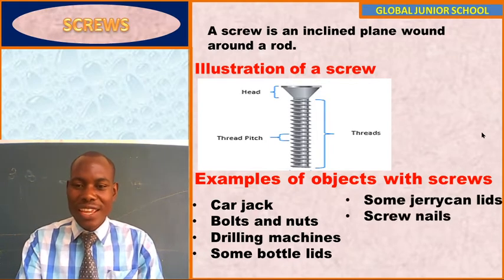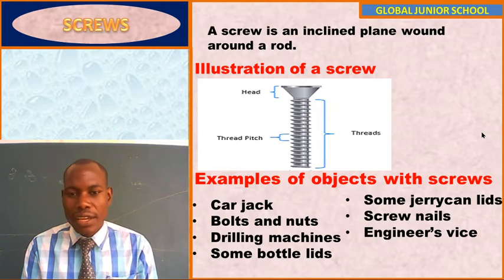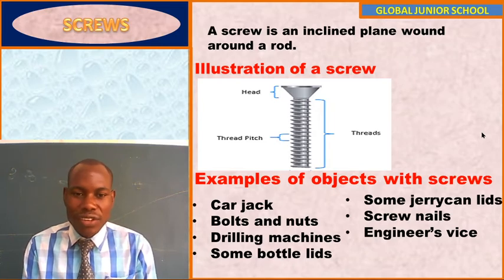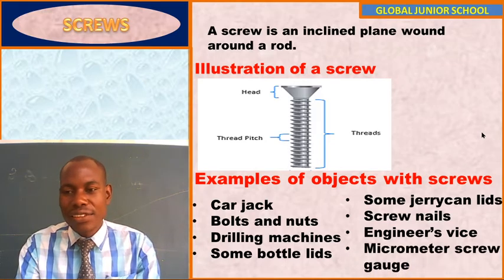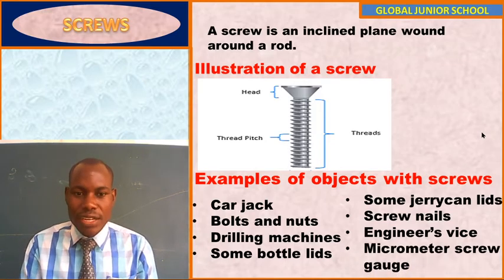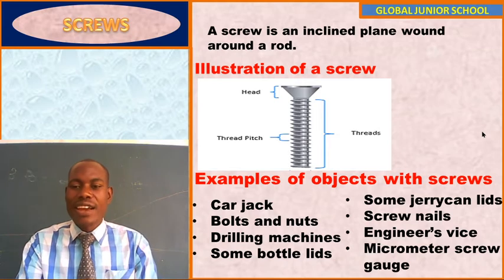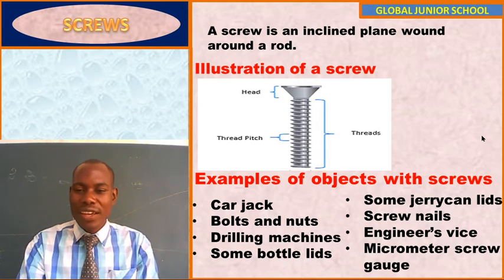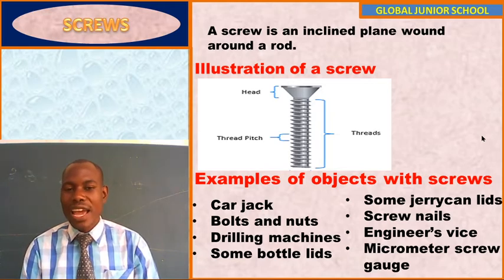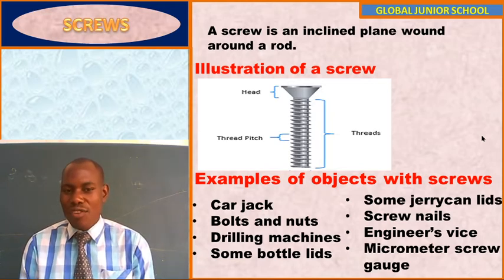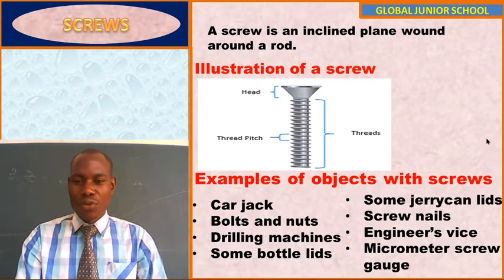We also have screw nails, which are basically found in radios and some machines. Then we have the engineer's vice — a device used for holding metals when they are being cut. And lastly, we have the micrometer screw gauge, which is basically used for measuring the diameter of very tiny objects. So I want you to take note of those examples of screws.